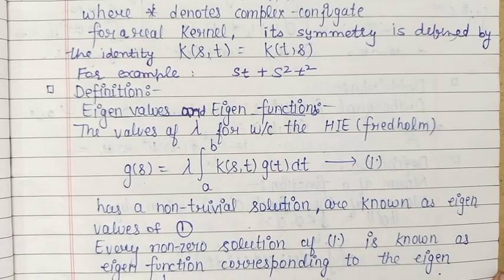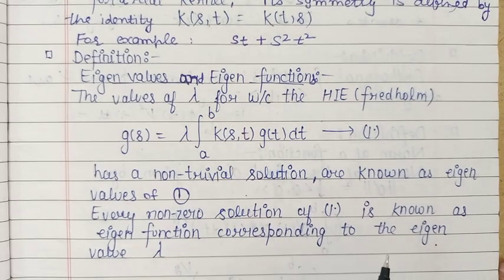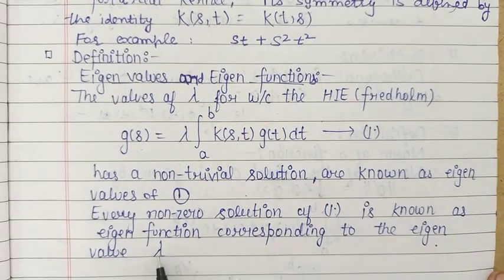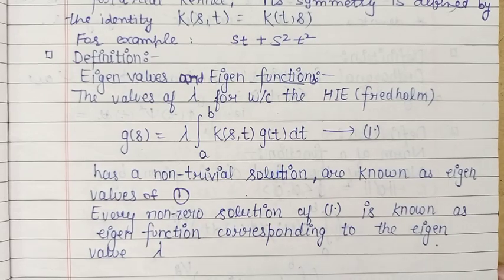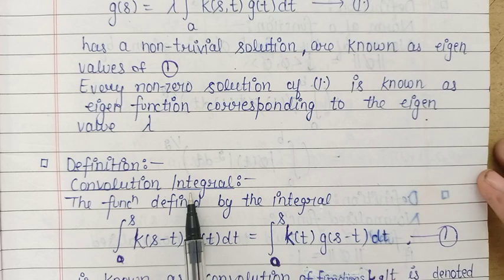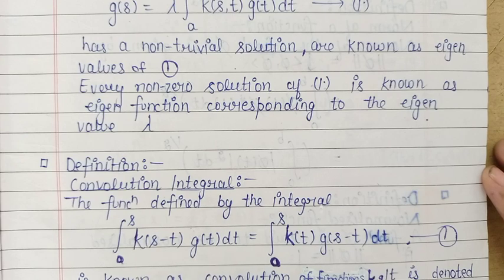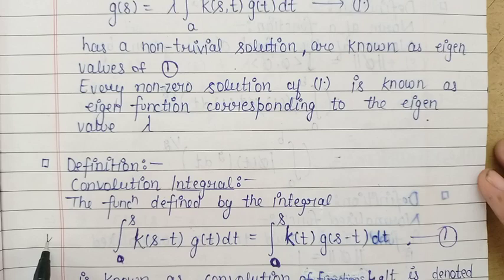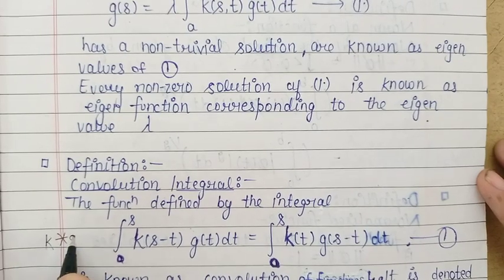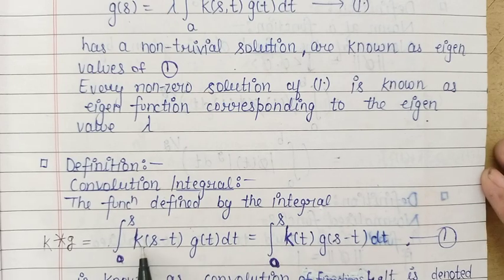Every non-zero solution of this integral equation is called an eigenfunction corresponding to eigenvalue lambda. Next, we define the convolution integral. Let us consider two functions k and g. The convolution of functions k and g is denoted by k * g, and it is defined by the integral from 0 to s of k(s − t) g(t) dt.